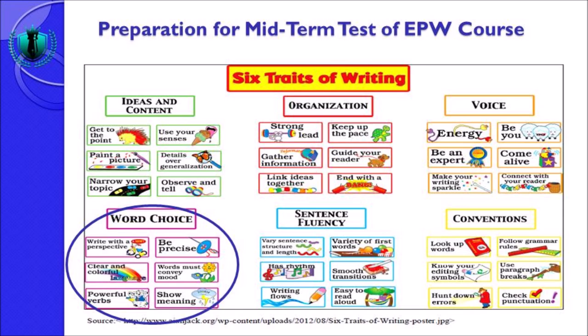Yang kelima, powerful verbs — kosa kata kata kerja yang digunakan sangat powerful. Contoh: 'I give my assignment to the lecturer' dibandingkan dengan 'I submit my assignment to the lecturer' — powerful verb-nya adalah yang kedua, yaitu 'submit'. Yang terakhir, show meaning — makna yang kita maksudkan itu kita tunjukkan. Meskipun banyak orang mengatakan ini multi makna, itu tergantung dari sudut pandang mana kita melihat. Al-Quran pun bisa multi makna bagi setiap orang tergantung orang yang membaca — itulah contoh maksud yang dijelaskan di bagian word choice.